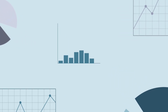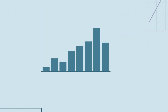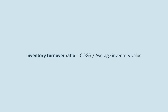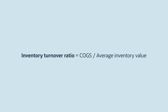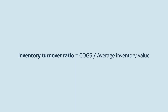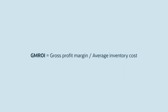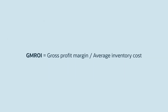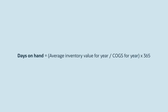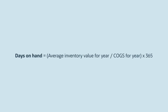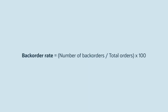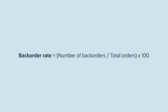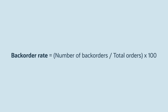Widely used inventory metrics are another crucial indicator of performance. These include inventory turnover ratio, which shows sales velocity, and gross margin return on investment, a measure of profitability. Days of inventory on hand and backorder rate help determine whether a business is ordering the right products.